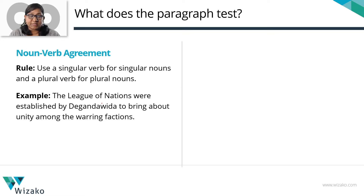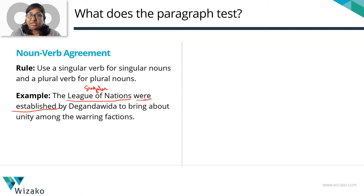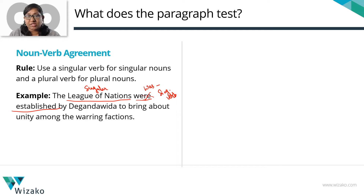Let's look at an example sentence: 'The League of Nations were established by Deganavida to bring about unity among the warring factions.' The verb here is 'were established.' Now, saying 'nations were' kind of flows well and seems right, but we're talking about the League of Nations as a whole — the name of one organization. How many leagues are we talking about? One. The League of Nations is singular, so the verb should also be singular. 'Were' is plural and therefore incorrect. You should say 'was,' which is the singular verb. Both the noun and verb have to agree in terms of number.